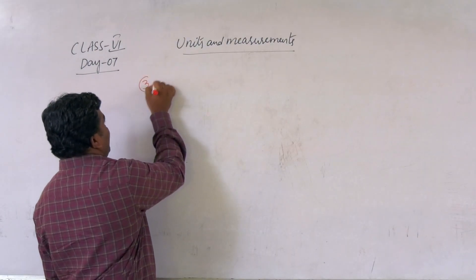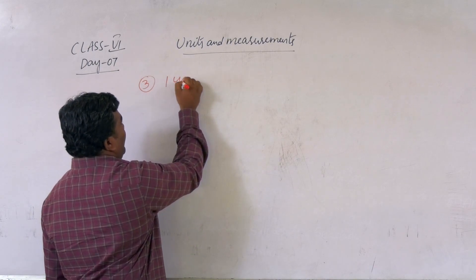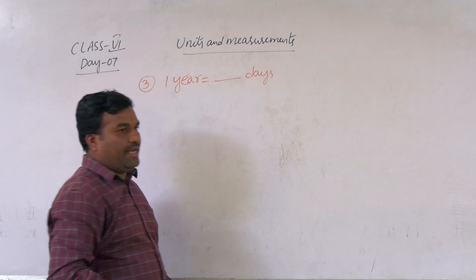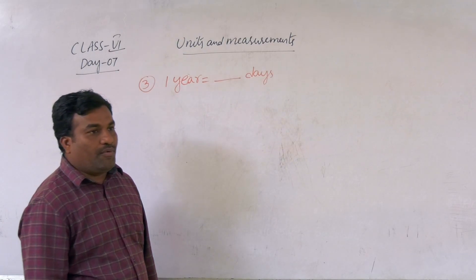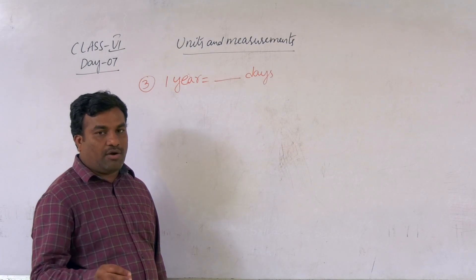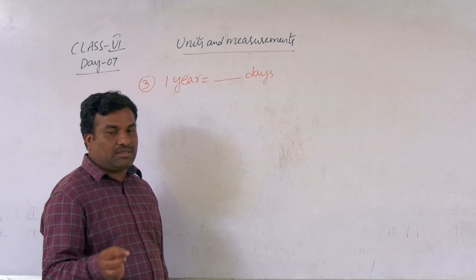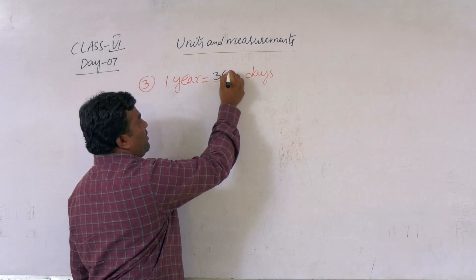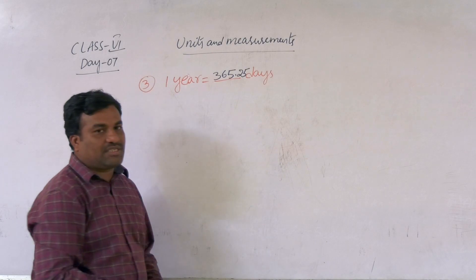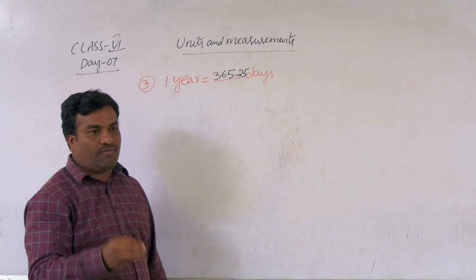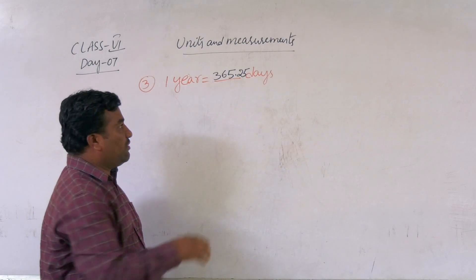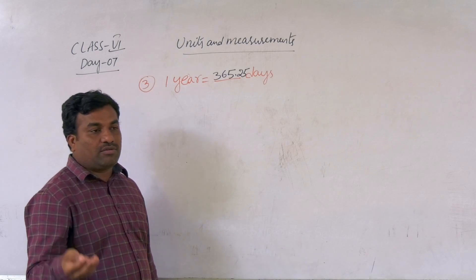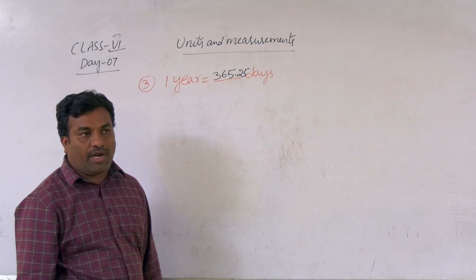The third question: one year equal to how many days? The earth revolves around the sun in one year. So one year equals 365.25 days, or 365 days and a quarter day. That is how we define one year.